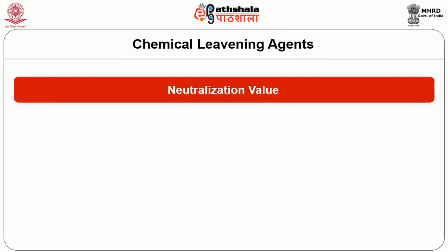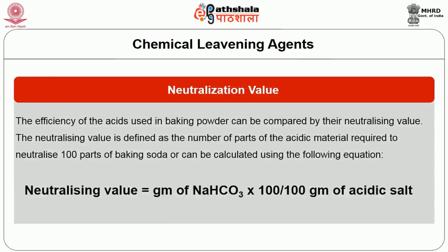The efficiency of acids used in baking powder can be compared by their neutralizing value. The neutralizing value is defined as the number of parts of acidic material required to neutralize 100 parts of baking soda, and can be calculated using the equation shown in the slide.